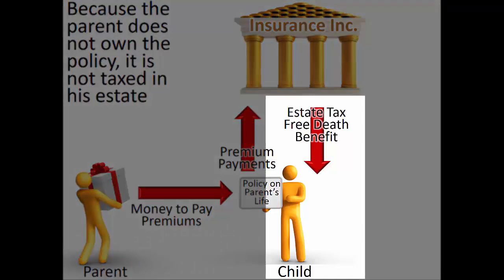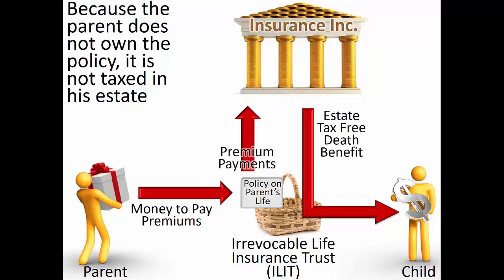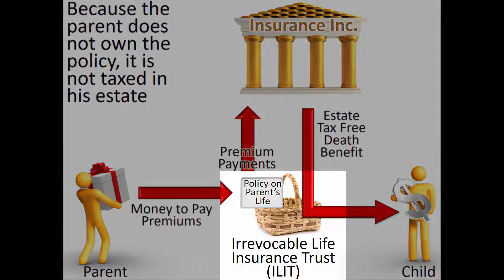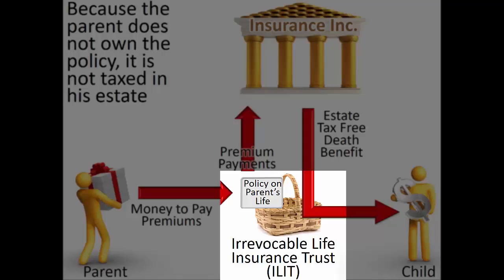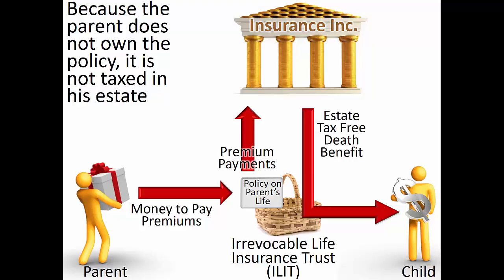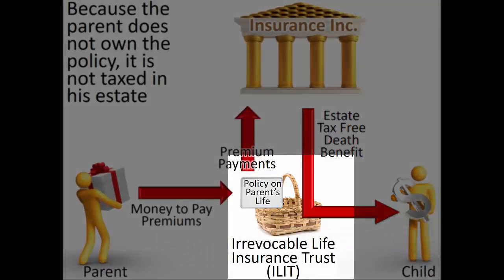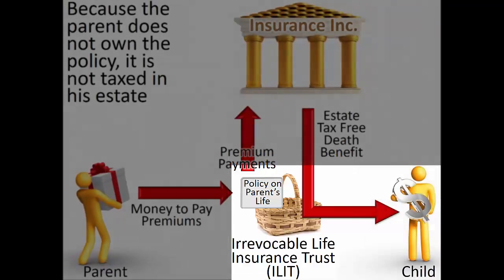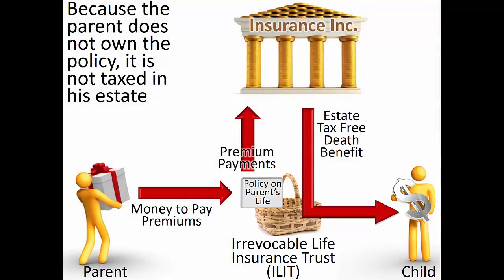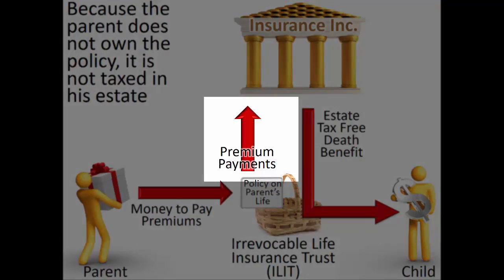The child receives these life insurance proceeds free from estate taxation because the life insurance policy was never in the parent's estate. The same concept applies if the policy is owned not by a child, but by a separate taxpaying legal entity not controlled by the parent, such as an irrevocable trust. Trusts designed for this purpose are referred to as ILITs — that is, irrevocable life insurance trusts. The ILIT is, for tax purposes, a separate person. Thus, when the parent dies, the life insurance policy and its death benefit are not included in the parent's estate because another person — the ILIT — owns the policy. The ILIT then receives the policy proceeds and distributes them to the child or to whomever the ILIT document names as beneficiary. An ILIT allows for distribution to multiple beneficiaries and ensures that money given for premium payments will be used for premium payments.